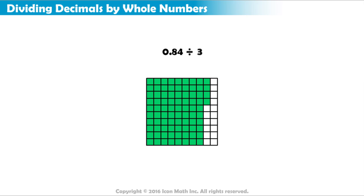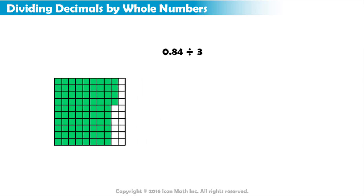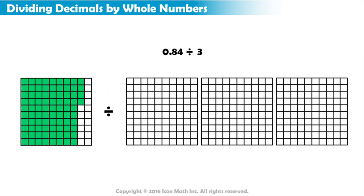Our divisor 3 means that we must split 84 hundredths into 3 equal groups. To do that, we will use 3 more 10 by 10 arrays to represent the 3 groups. We will begin by sharing the columns between our 3 arrays. There are 8 columns.